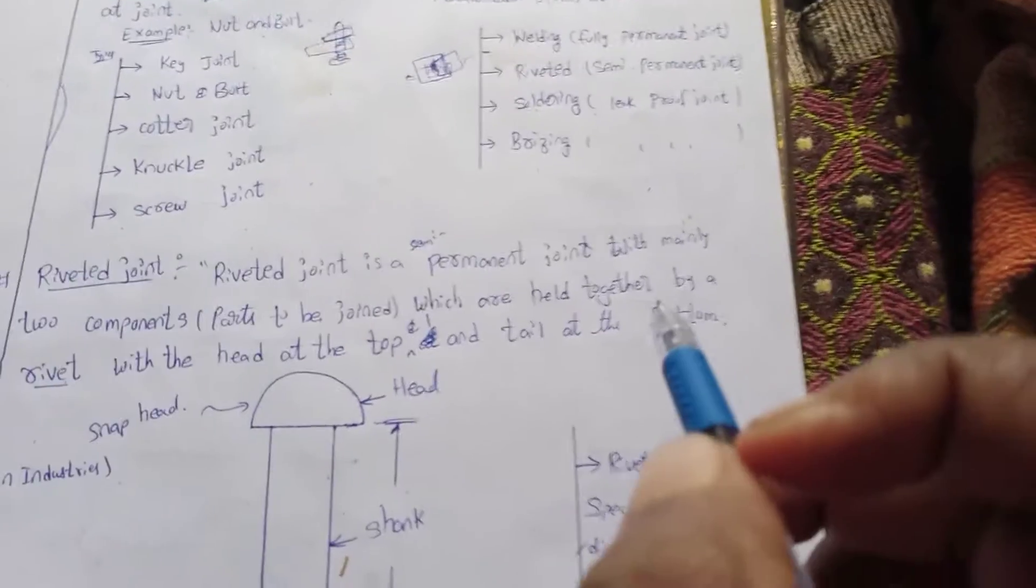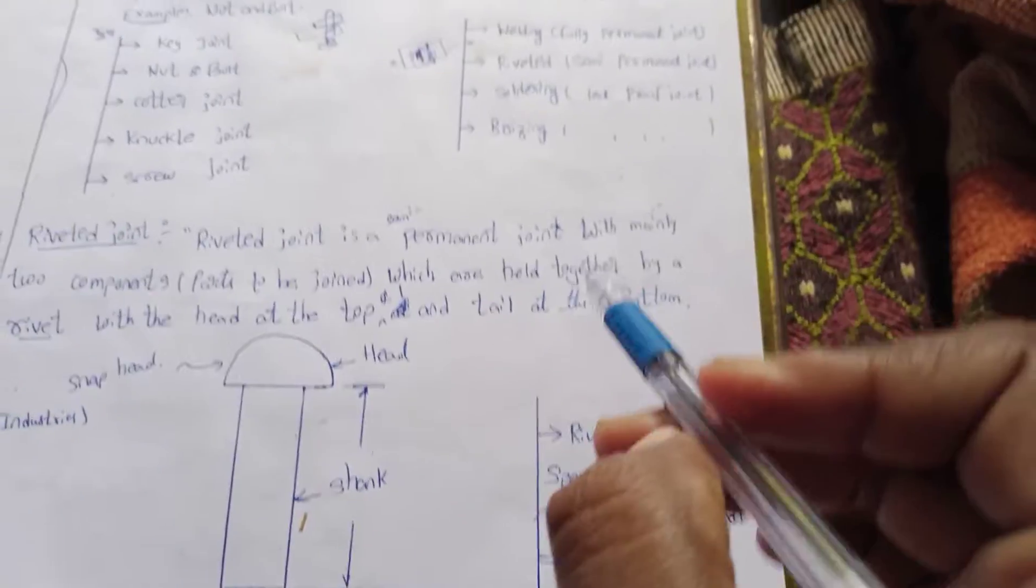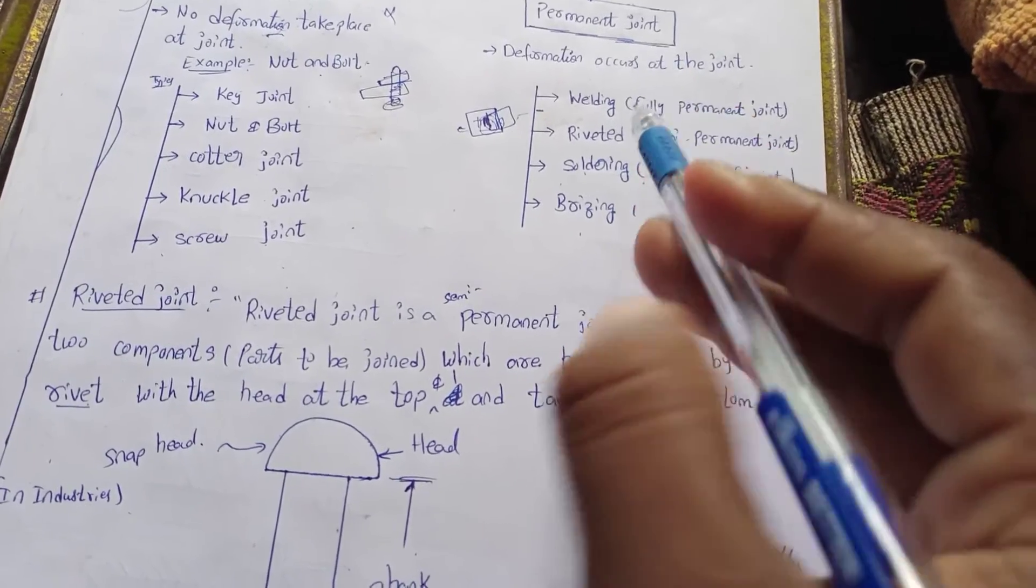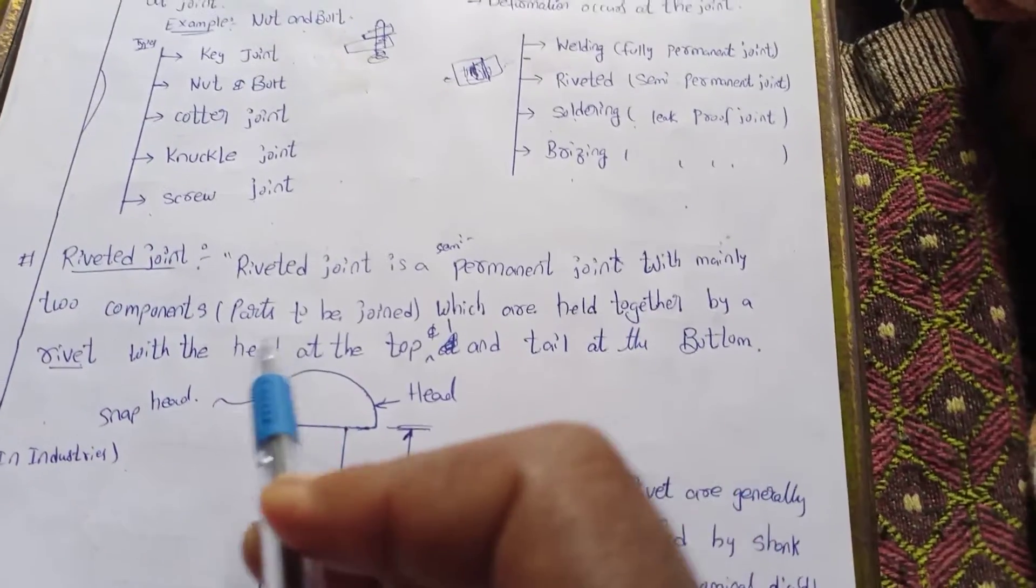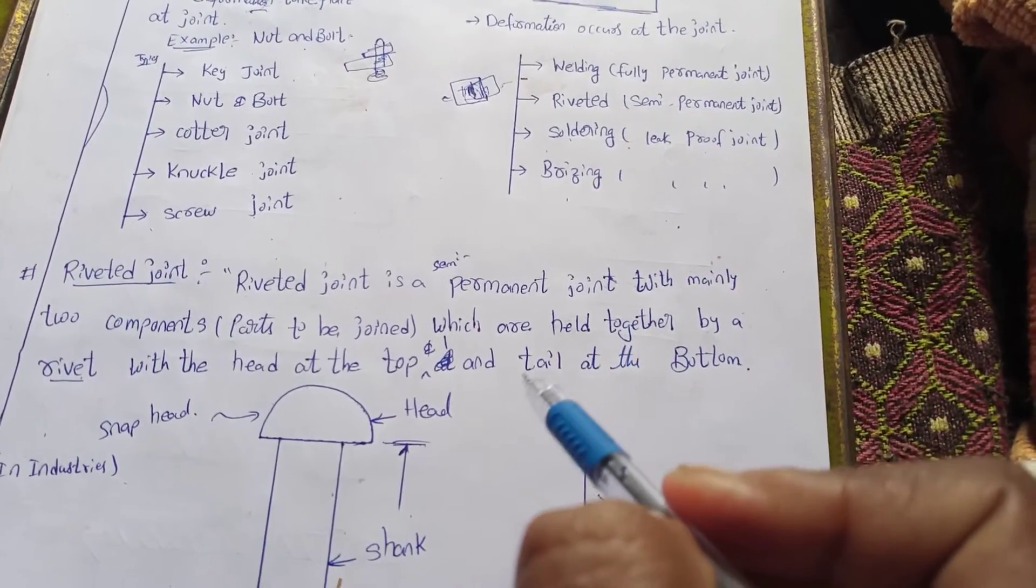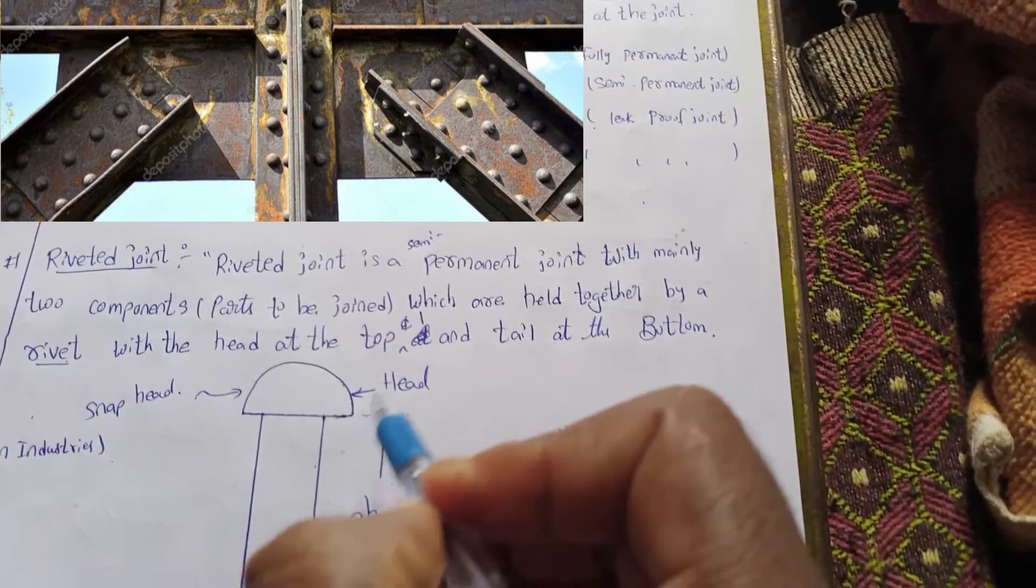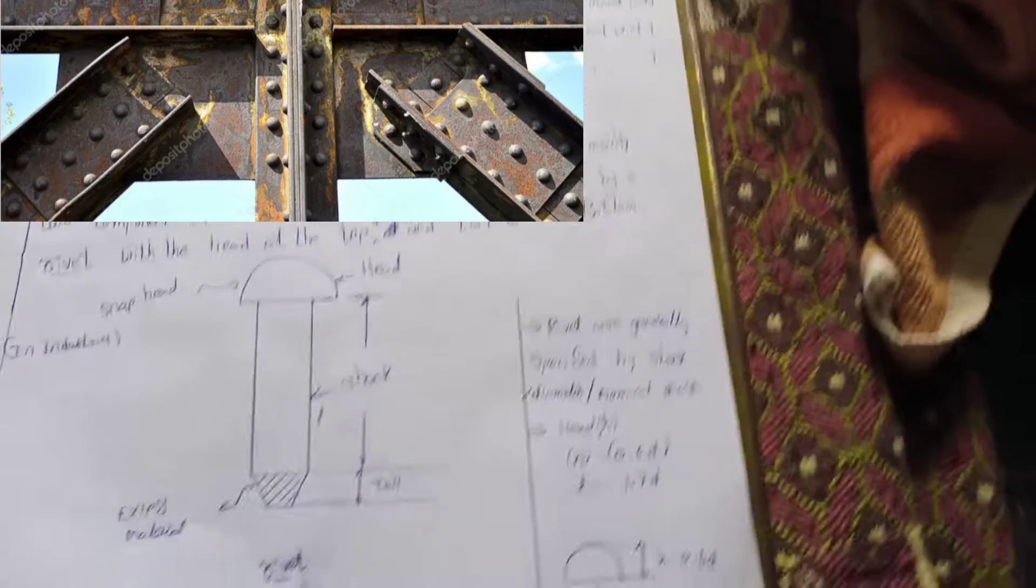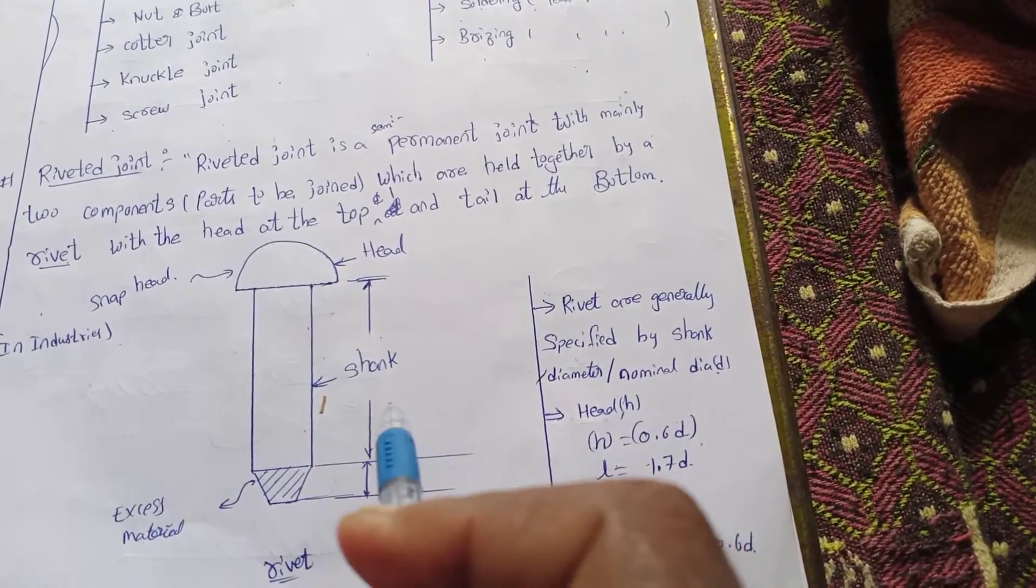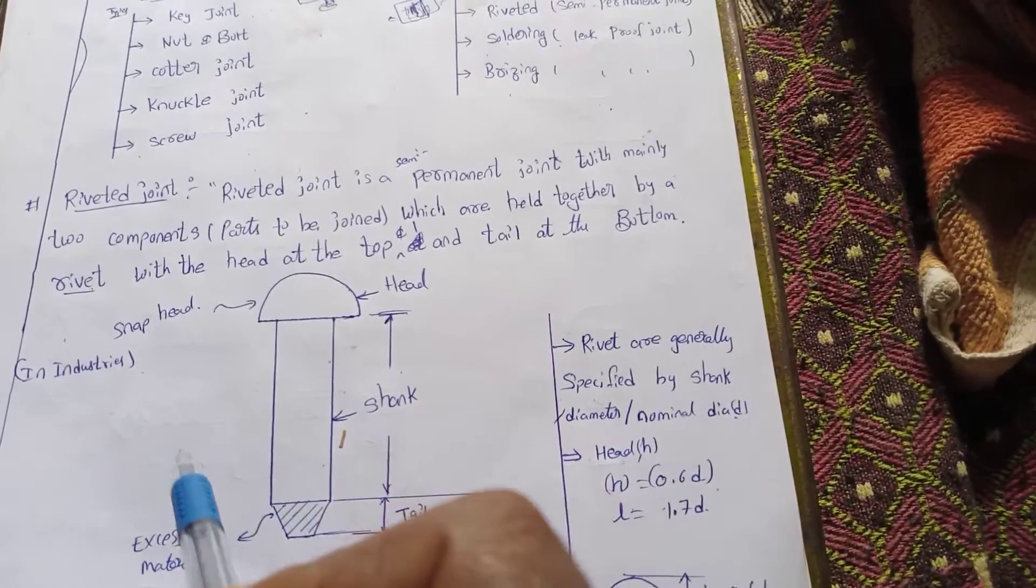Riveted joint is a semi-permanent joint. This is a permanent joint with mainly two components which are held together by rivet. This has a head and the tail is at the bottom. This is the head or snap head.